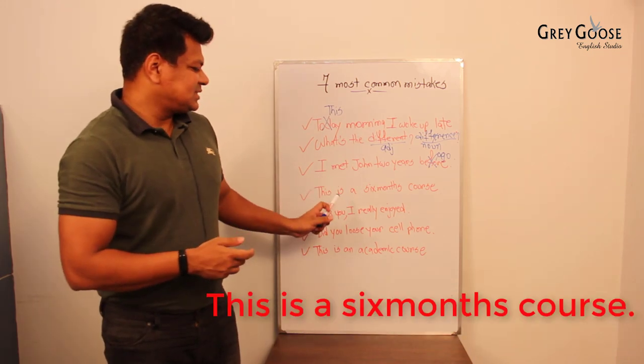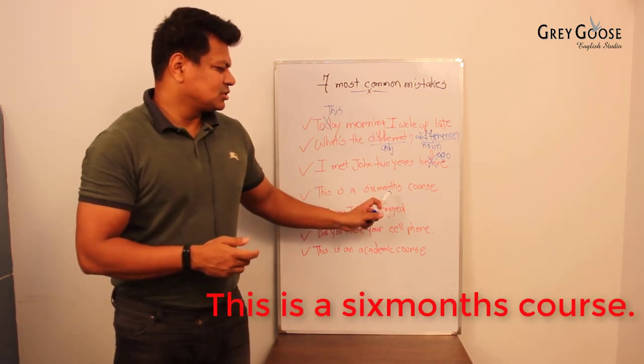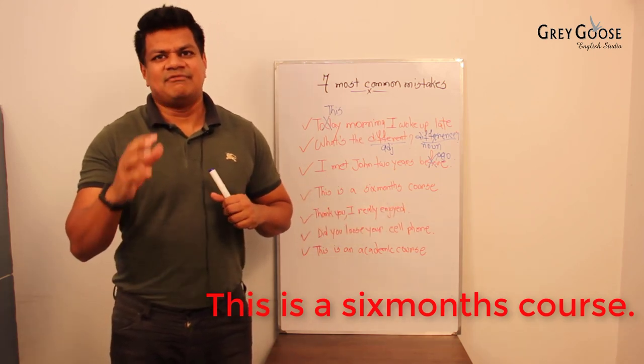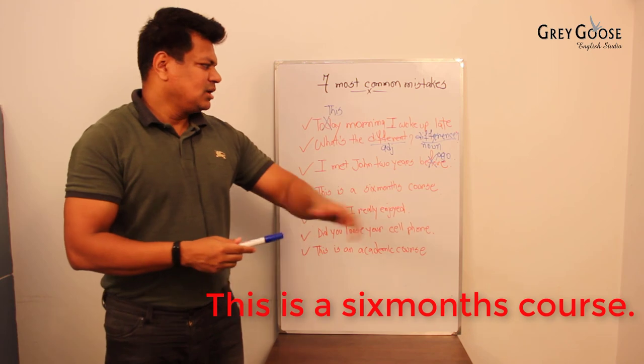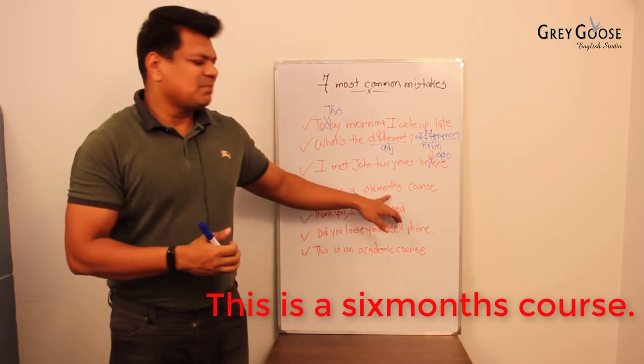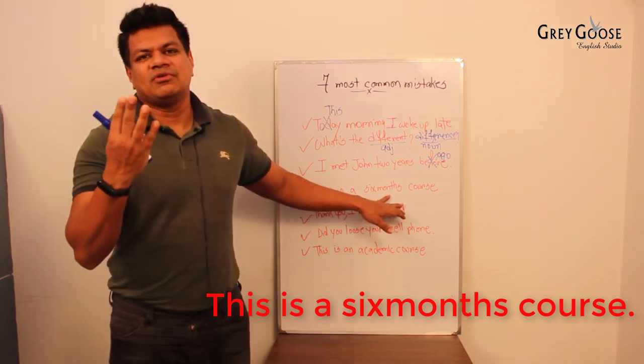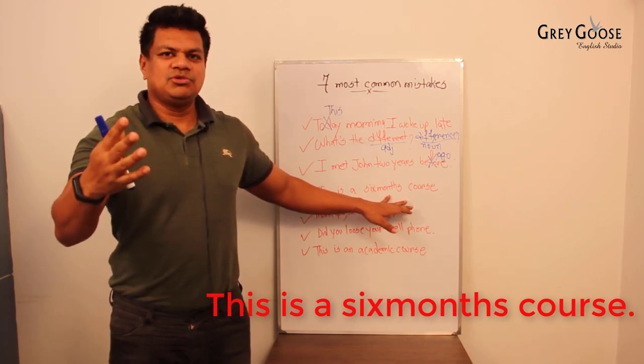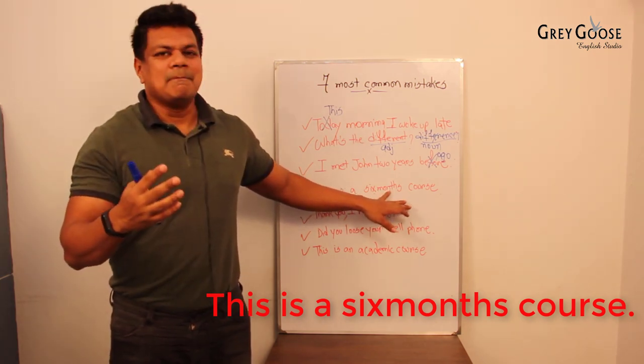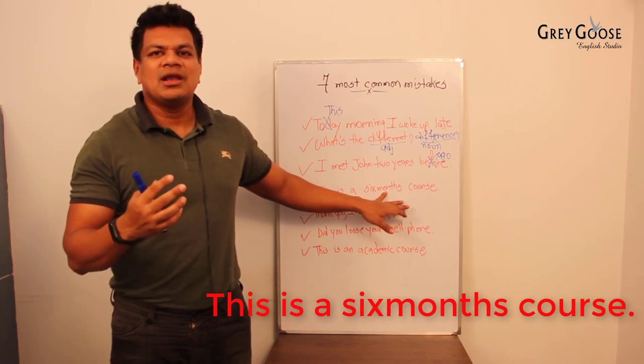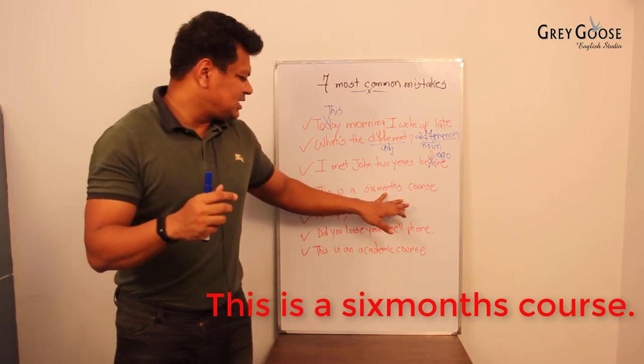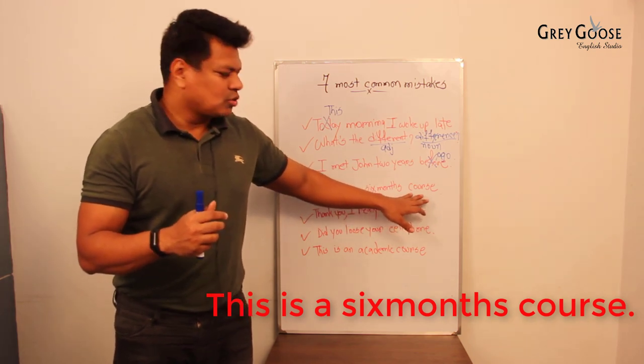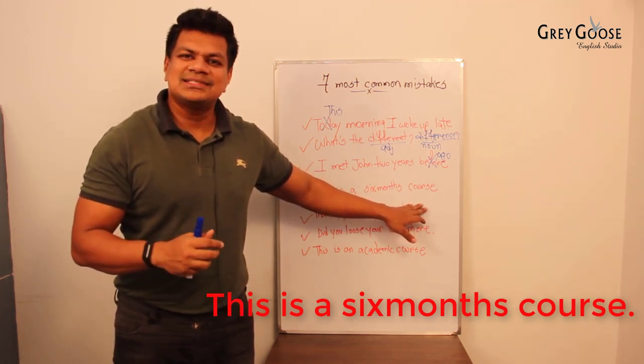Moving on to the next one: 'This is a six months course.' Now again, a very common mistake. The reason we normally write 'six months' is because you see one, two, three, four, five, six—and obviously 'six months' is plural. So most students would write 'six months' since six is a plural number. But the problem is here: 'This is a six months course.' Now 'course' is working here as